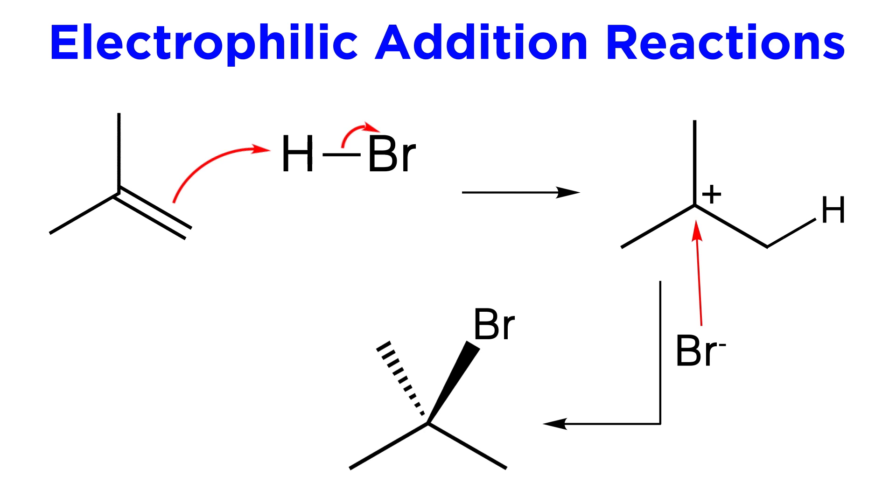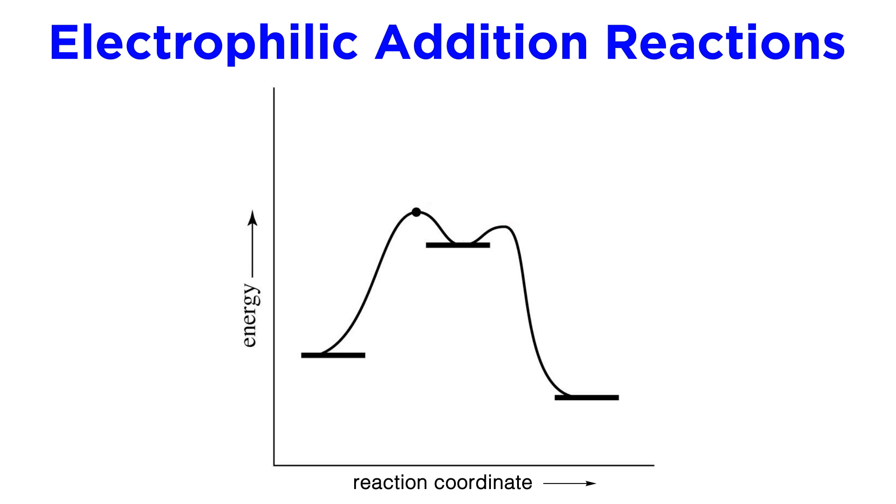As we can see, the pi bond is now gone, and each carbon that was participating in the pi bond has a new group attached to it, either hydrogen or bromine. An energy diagram for this reaction would clearly depict two steps.